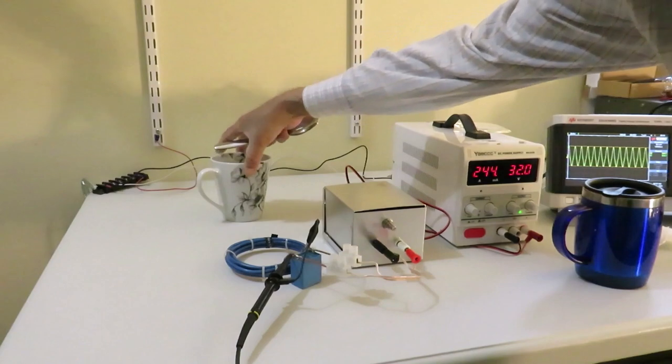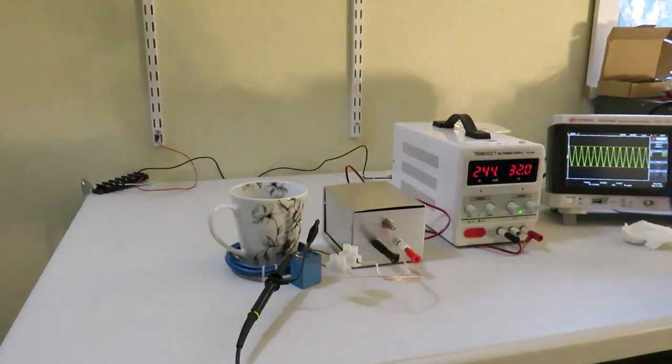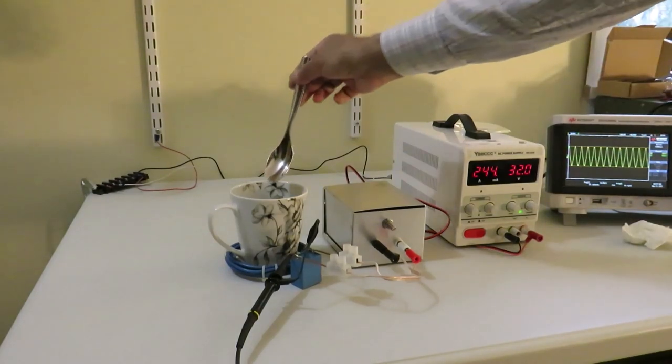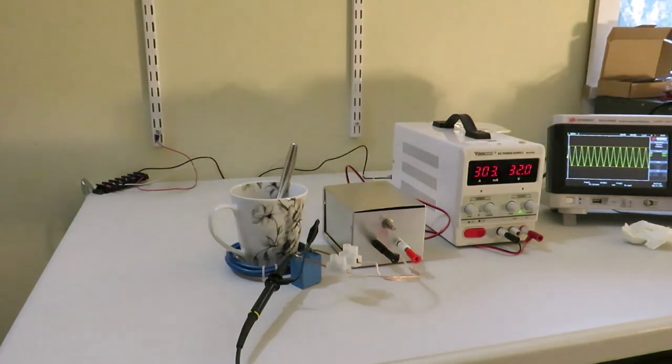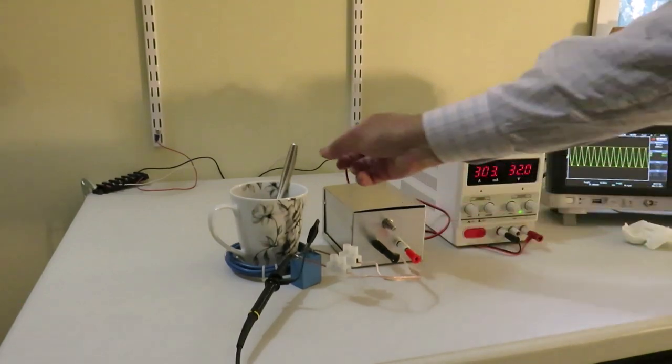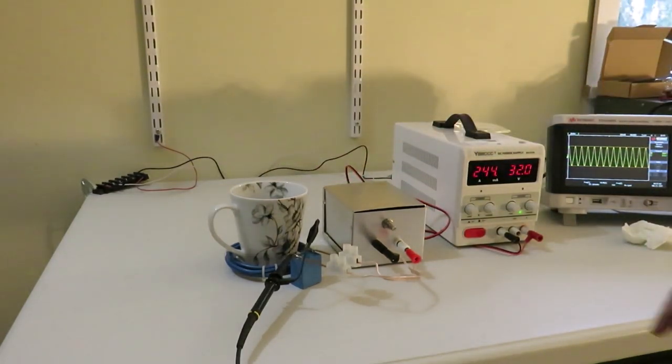Now for the ordinary coffee mug, it cannot be heated because of the ceramic material. But you can place a metal spoon inside. And you can see the change in current. And you will feel the spoon is getting heated after some time. So you can try with different types of spoons. Some spoons get heated quickly and some take longer time.